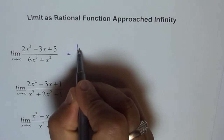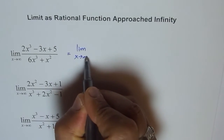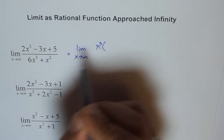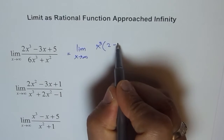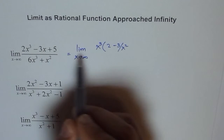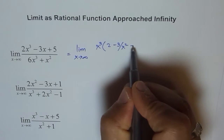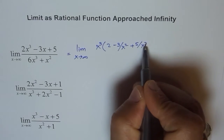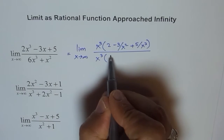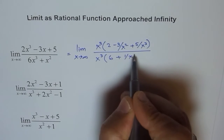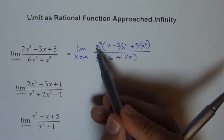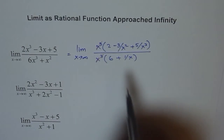So this equals limit as x approaches infinity. We factor out x³, and we are left with 2 minus 3 over x² — when I factor out x³, 3x divided by x³ results in 3 divided by x². Plus 5 divided by x³. Over, in the denominator we have x³ and we get 6 plus 1 over x.